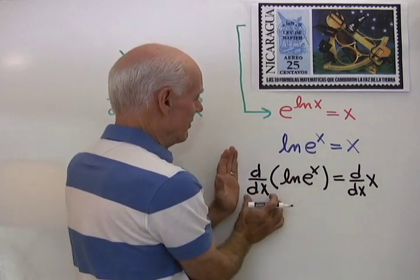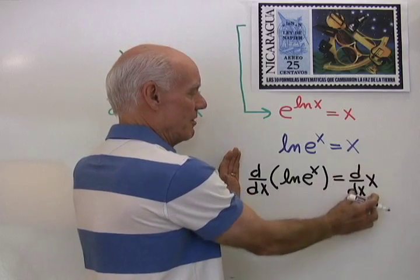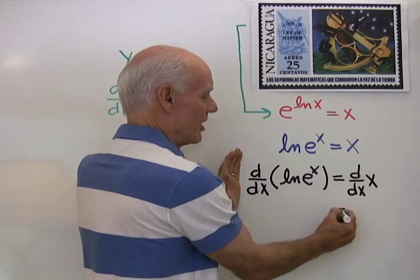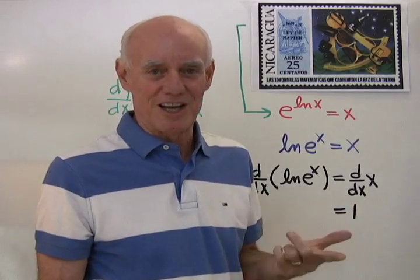So I take the derivative, the derivative with respect to x of log e to the x, and then I take the derivative of this, the derivative with respect to x of x. Well look, I know what that is, that just comes out 1. The derivative of x with respect to x is 1.